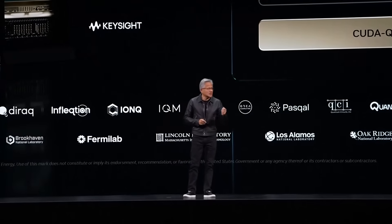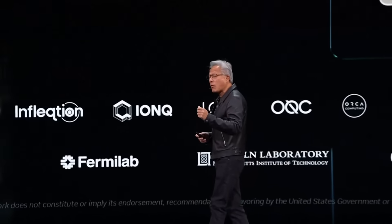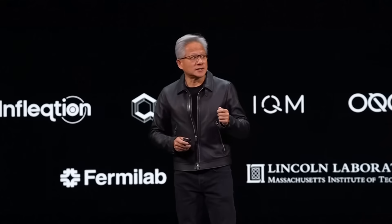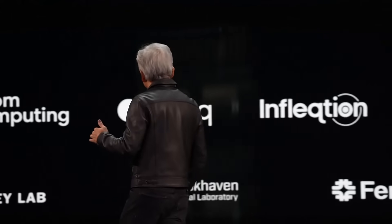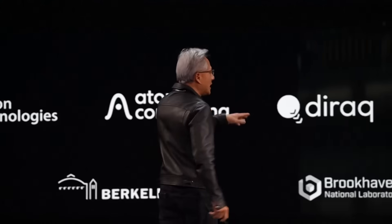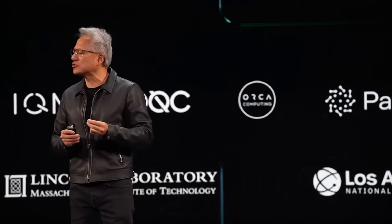We are announcing today 17 different quantum computer industry companies supporting MVQ Link. And I'm so excited about this — eight different DOE labs: Berkeley, Brookhaven, Fermi Labs in Chicago, Lincoln Laboratory, Los Alamos, Oak Ridge, Pacific Northwest, and Sandia National Lab. Just about every single DOE lab has engaged us, working with our ecosystem of quantum computer companies, so that we could integrate quantum computing into the future of science.